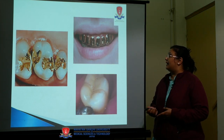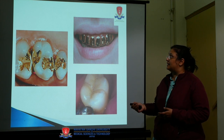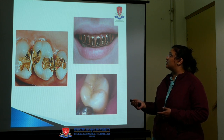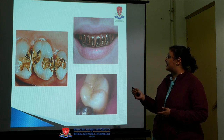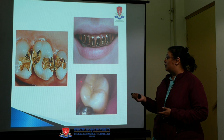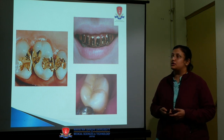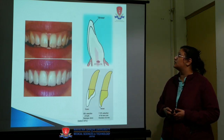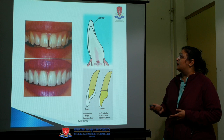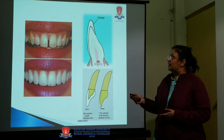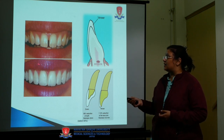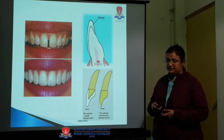Examples of indirect restorations include indirect gold restorations, indirect gold crowns, and indirect all-ceramic restorations that are tooth-colored. In cases of diastema spacing, we can opt for indirect veneers.